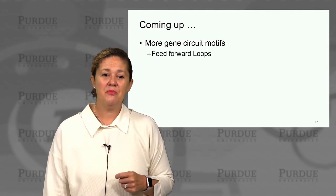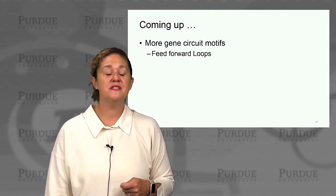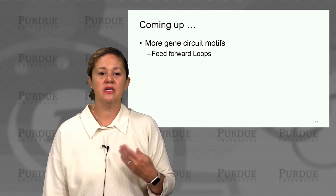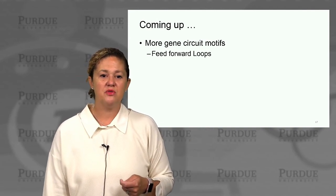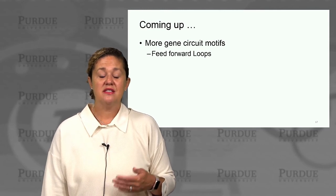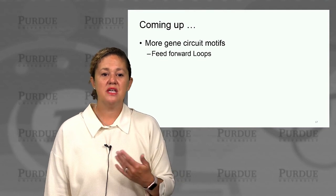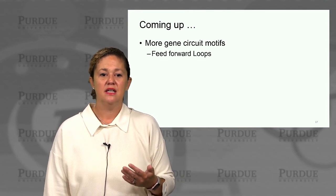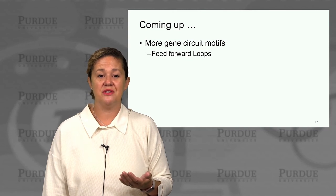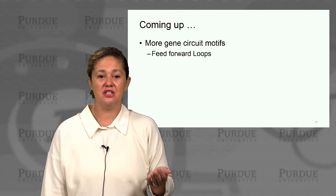Coming up, we're going to keep diving into more gene circuit motifs. Next up is feedforward loops, and we'll continue to look at how these motifs have design features — such as we just saw for negative auto-regulation and robustness — and see how feedforward loops can engineer other design features into both natural and engineered systems.